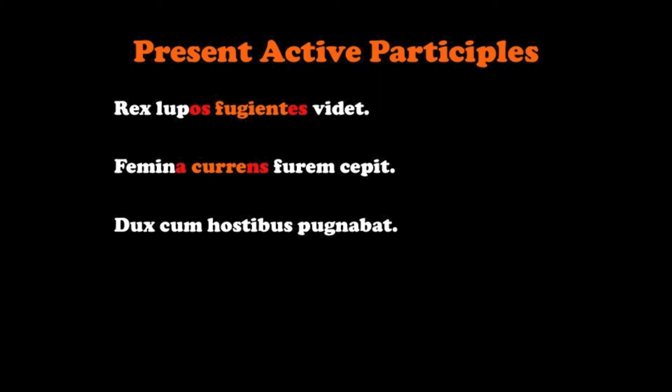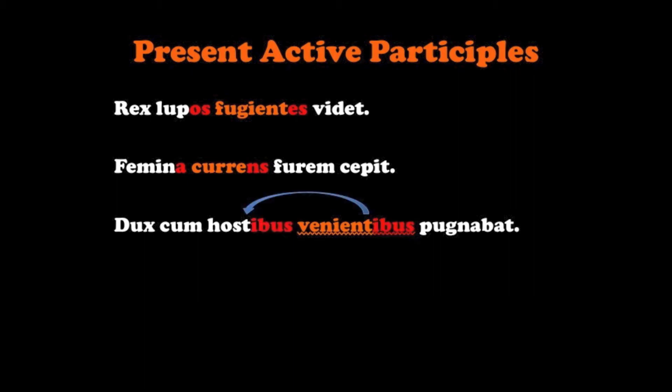One more example. Dux cum hostibus pugnabat — the leader was fighting with the enemy. This time, let's add the participle venientibus. Dux cum hostibus venientibus pugnabat. Venientibus and hostibus agree in case, number, and gender; therefore venientibus is modifying hostibus. Dux cum hostibus venientibus pugnabat — the leader was fighting with the enemy coming.